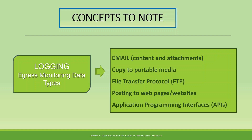All these data types are being logged — everything going out through these data types is being logged in your system. When you are copying something to a portable media like a flash drive or CD, it is going to be logged. When FTP services are used, it is logged. When you are posting something to web pages or websites, the network logs it. What goes out through an API is also always logged. This is the concept you need to take note of when talking about securing data within your system under domain 5.